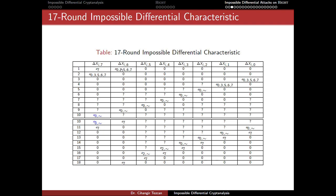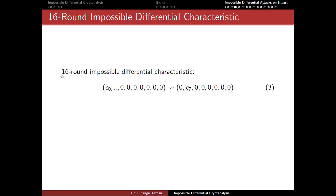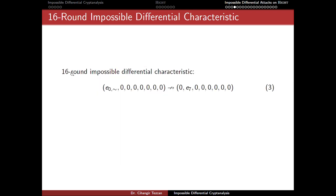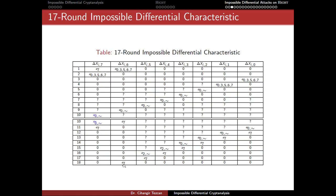Last time we constructed our impossible differential. Now we will turn it into an attack and perform the impossible differential cryptanalysis. In the previous slide we obtained a 17-round impossible differential, but since there are differences in two bytes at the top, when we add more rounds these two differences don't help much. So instead of using that, in our attack we remove the first line, reducing this impossible differential to 16 rounds.